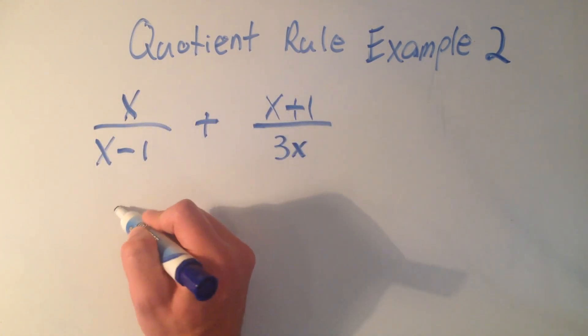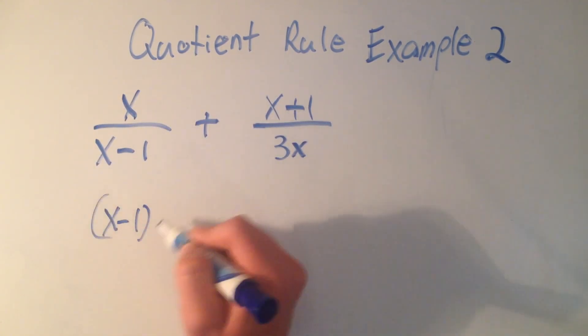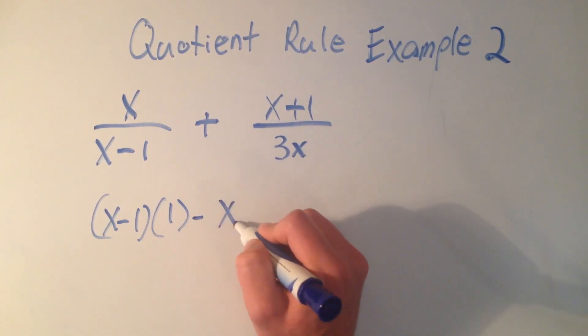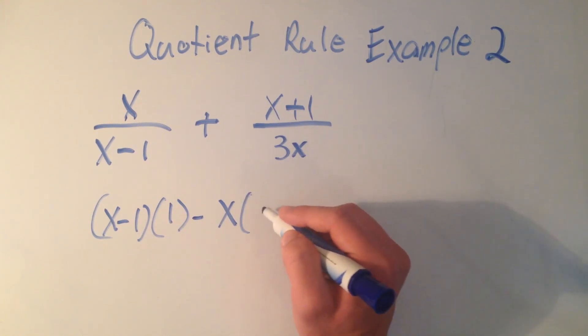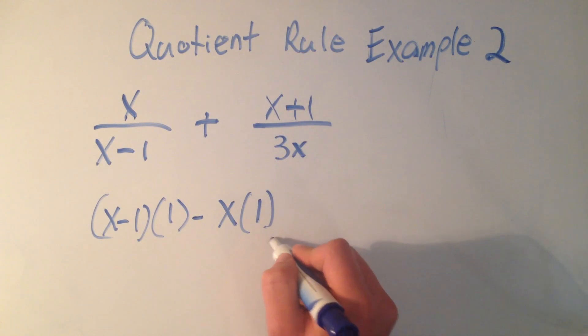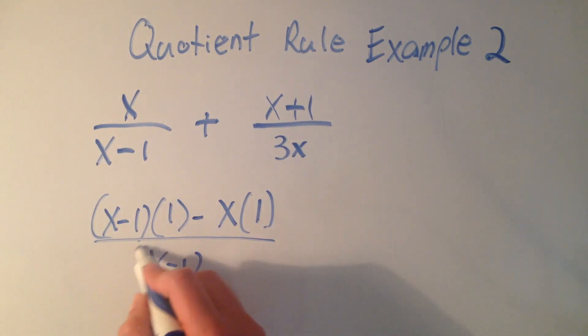The quotient rule says it's the bottom times the derivative of the top, the derivative of x is 1, minus the top, x, times the derivative of the bottom. And the derivative of x minus 1 is just 1, all over the bottom squared. So that's the first part.